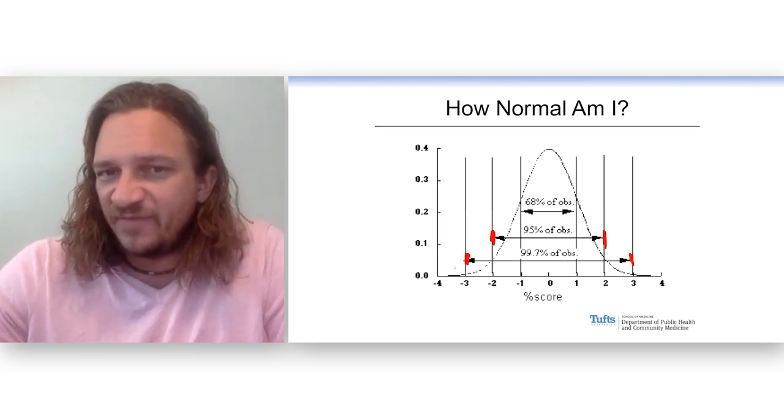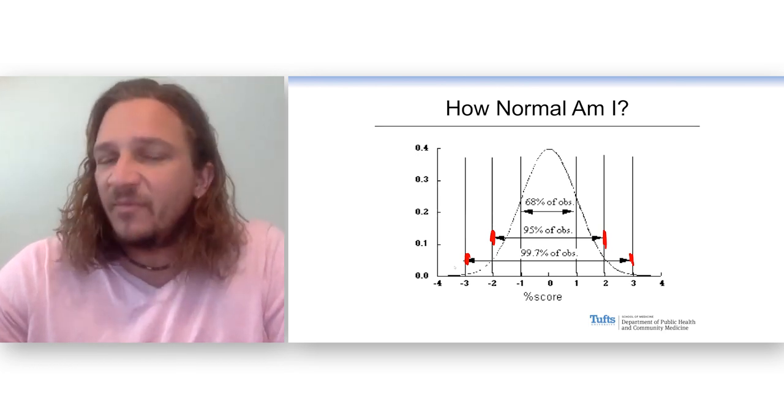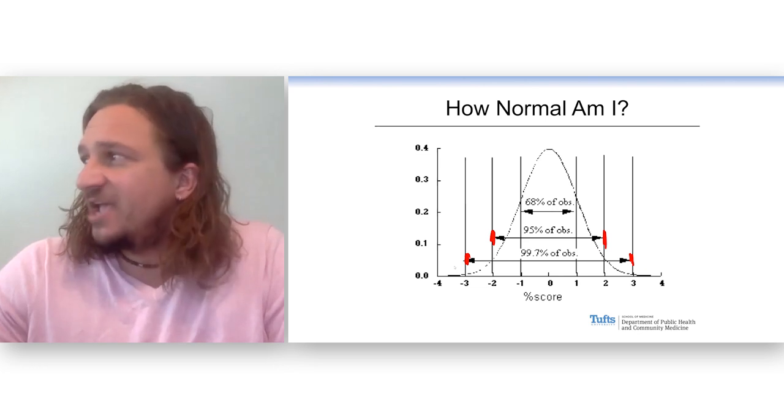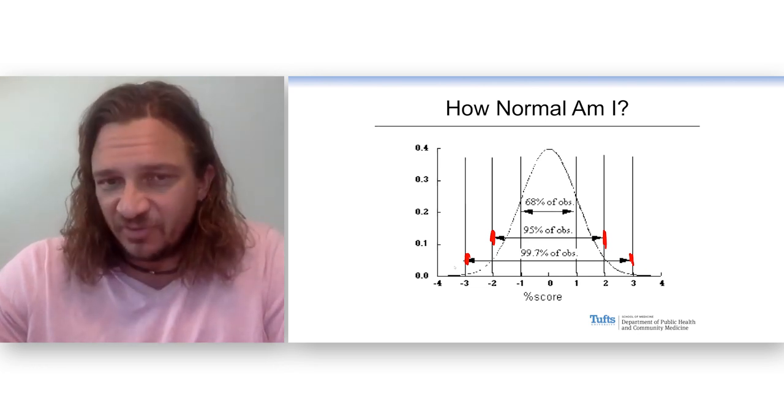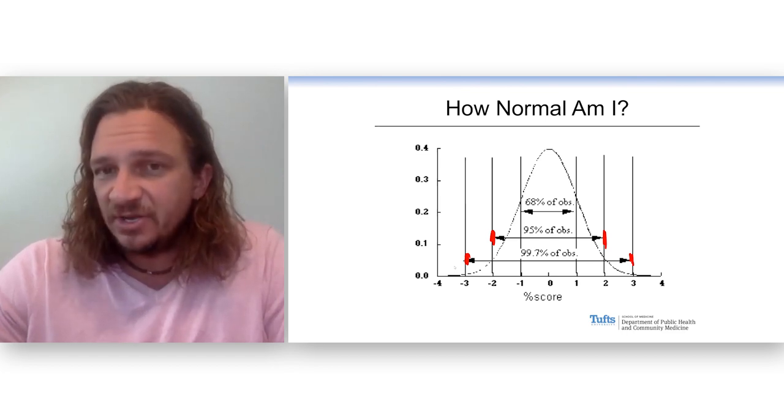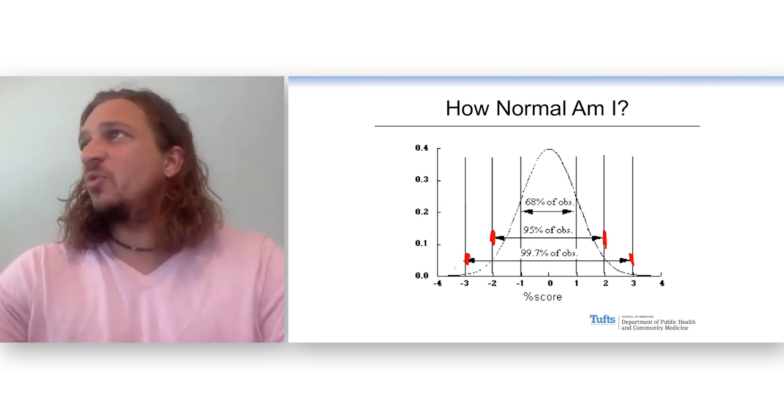When we couple that with the fact that this can be thought of in terms of probability, we can now say, what's the chance, if I randomly pulled somebody out of this distribution, that I would see certain values? And this allows you to start to ask questions.